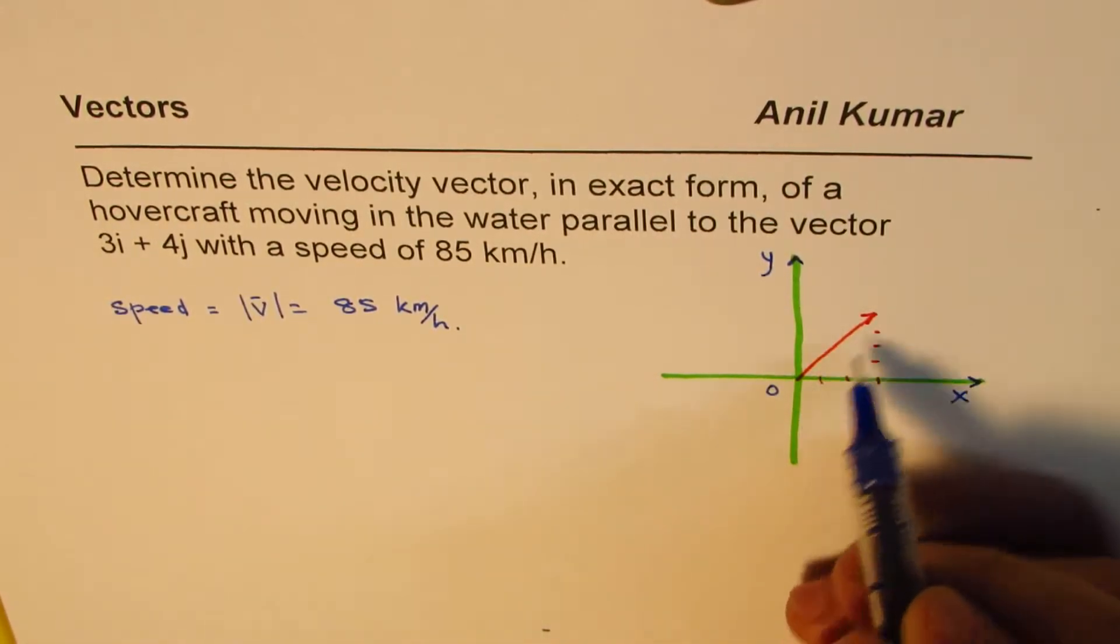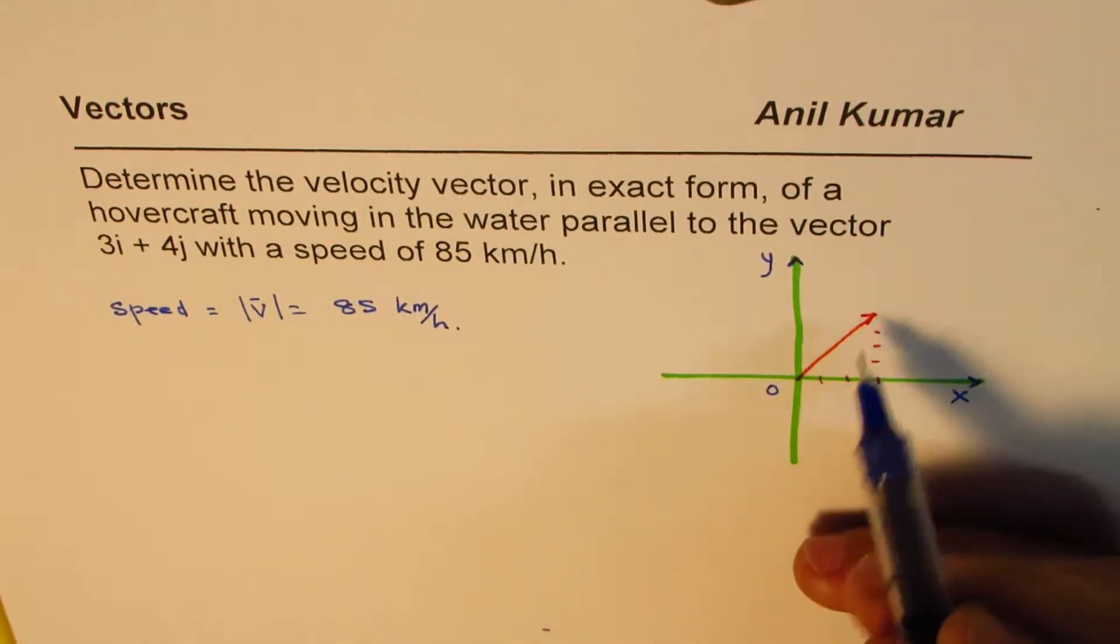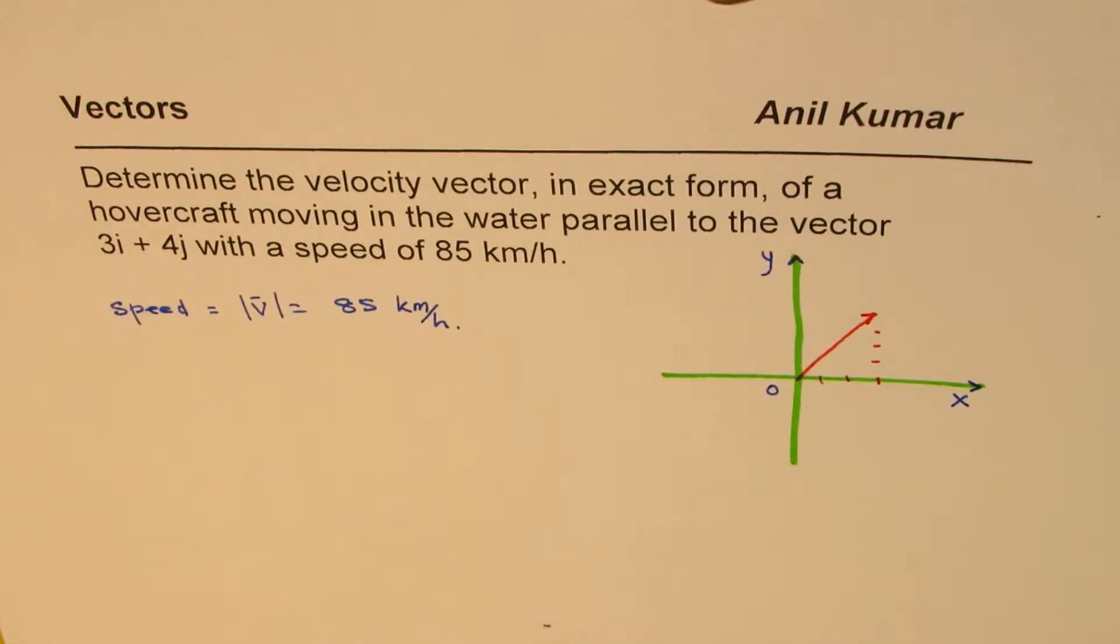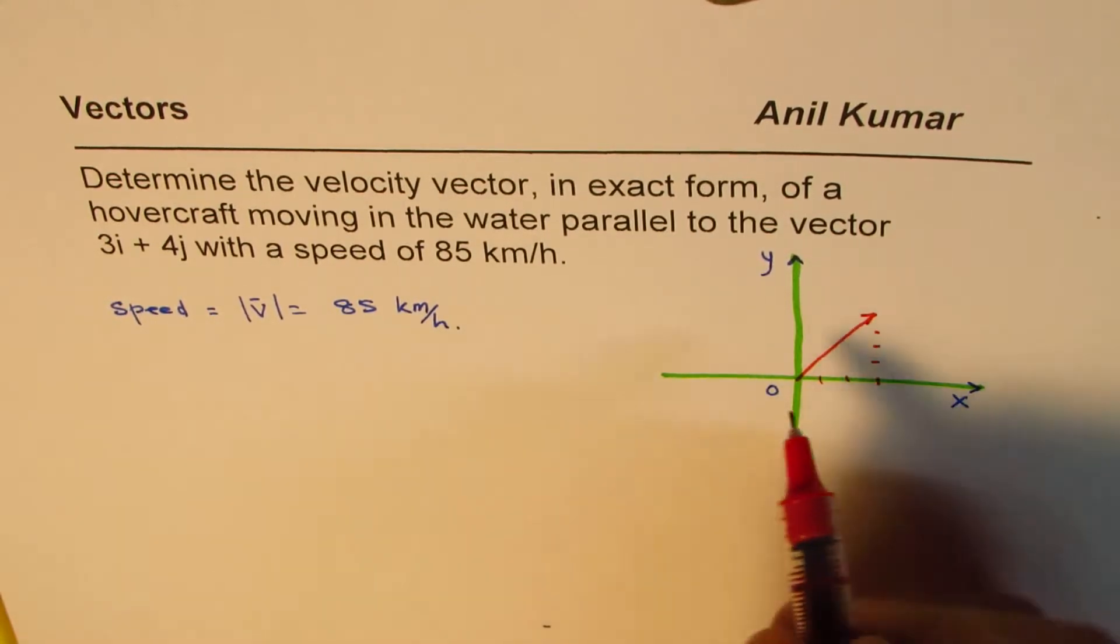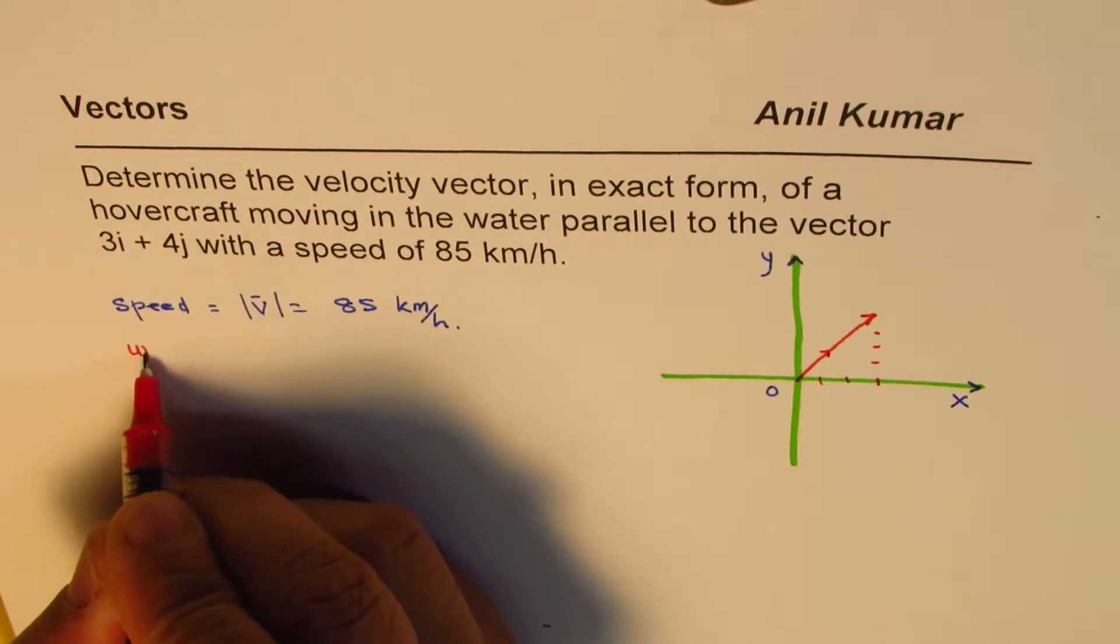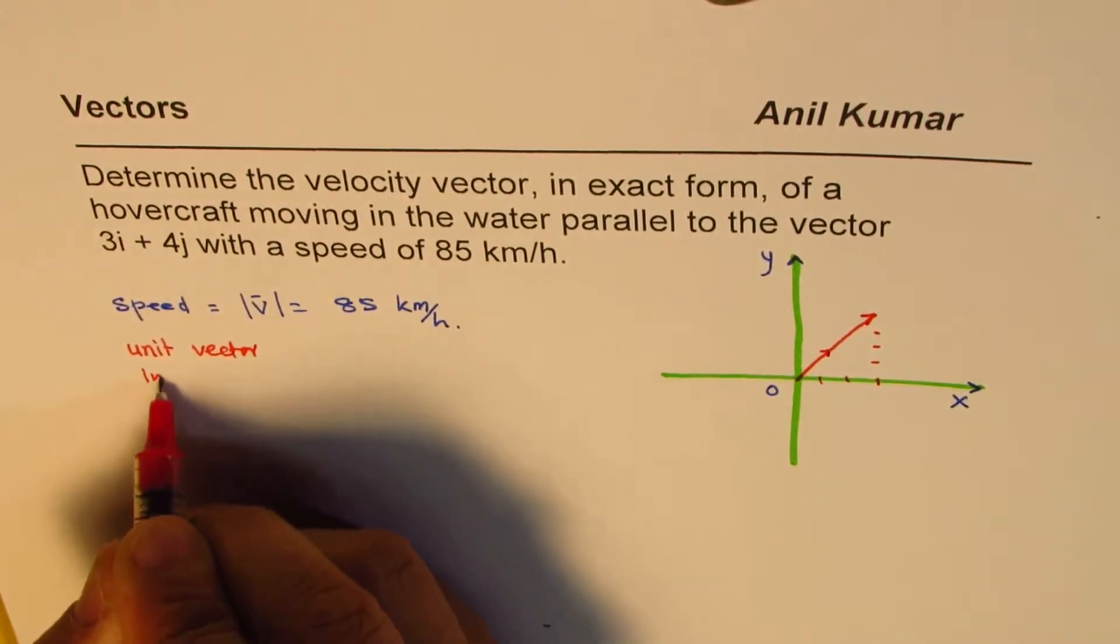So, we want the velocity vector in this direction with a magnitude of 85. That is basically the question. So, the steps involved are, we should first find the unit vector in this direction. Find unit vector in given direction.